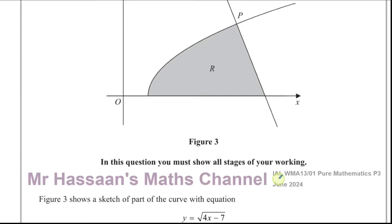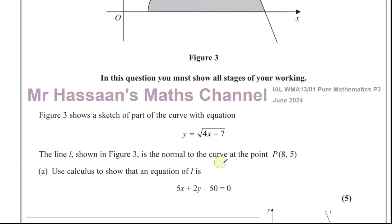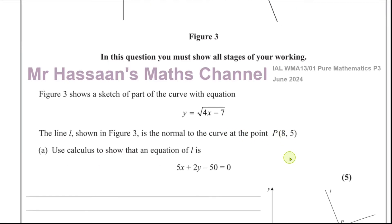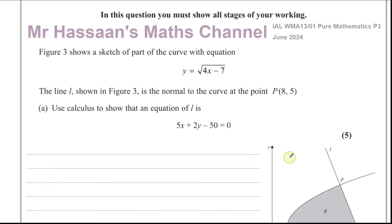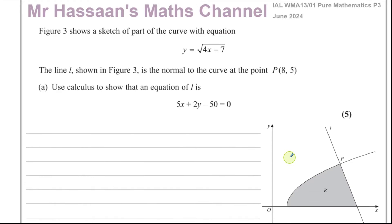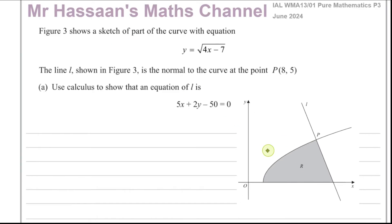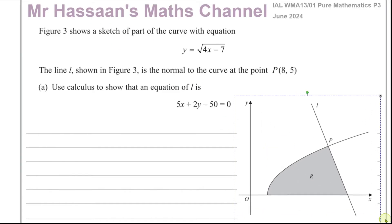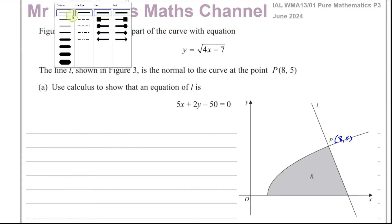The line L shown in figure 3 is a normal to the curve at the point P(8, 5). Use calculus to show that the equation of line L is 5x plus 2y minus 50 equals 0. So I've got a copy of this graph over here so we can look at it a bit more clearly. We've got the point P here which is (8, 5).